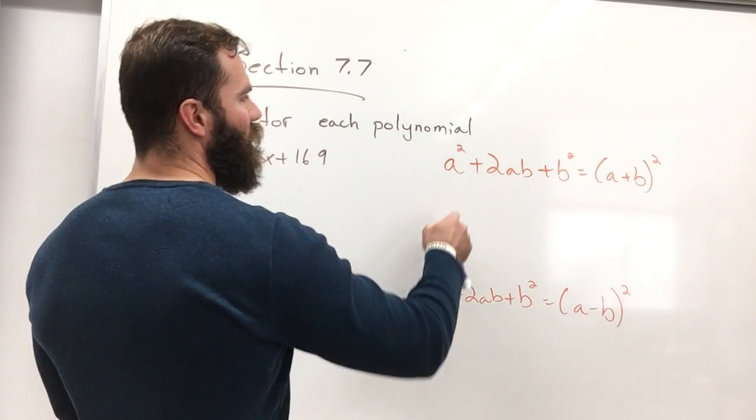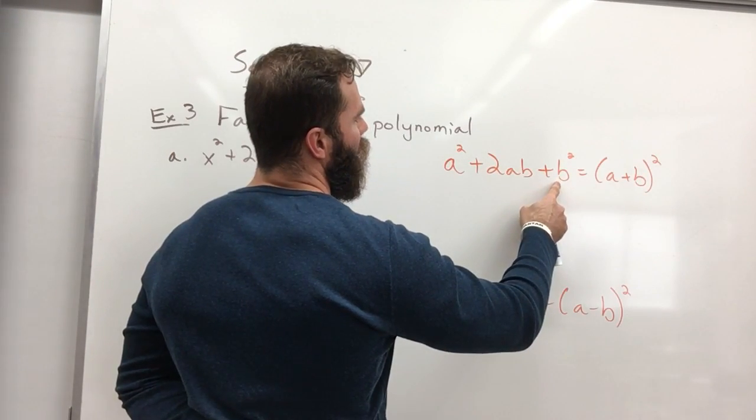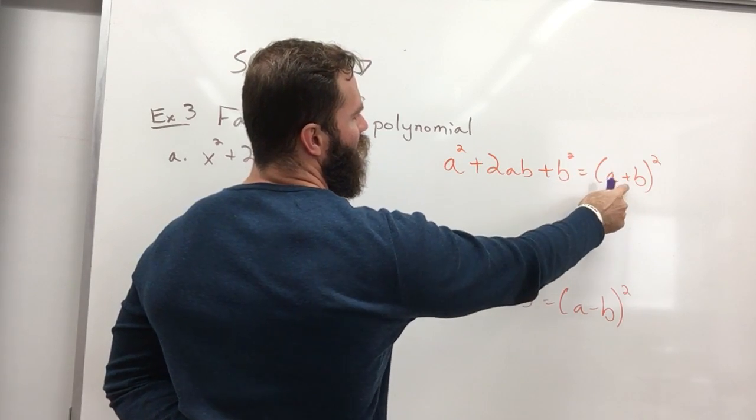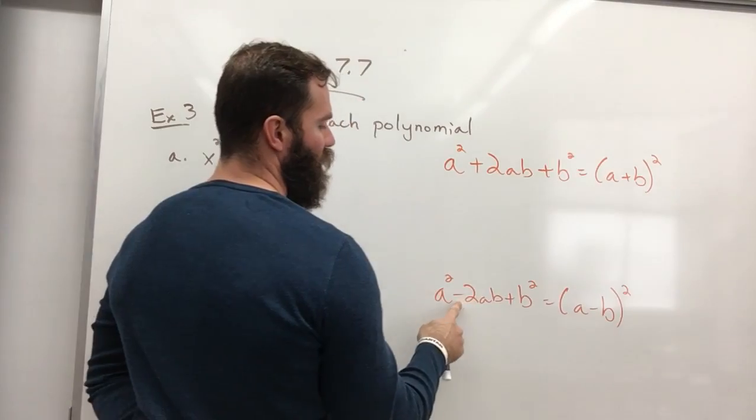Basically, if you've got a square in the front and in the back, it's possible that you can do this. If they're all positive, it's positive. If there's a negative, there's a negative.